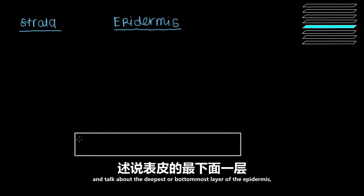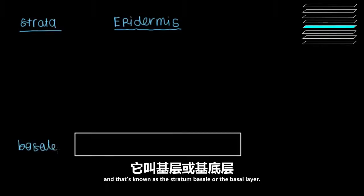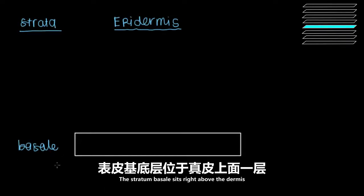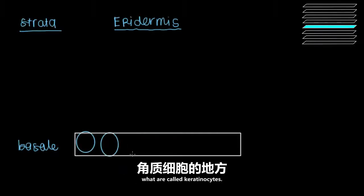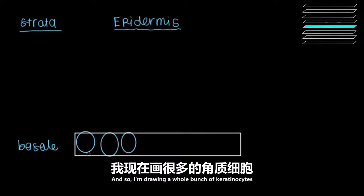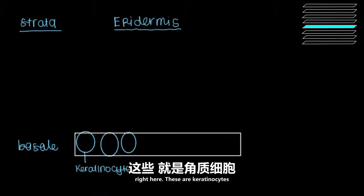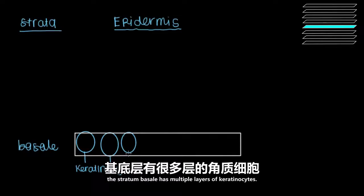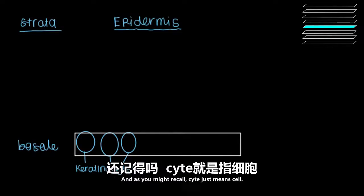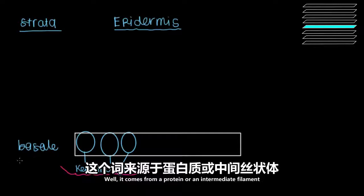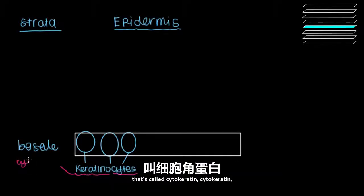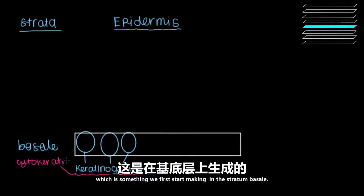We'll start from the bottom and talk about the deepest layer of the epidermis, known as the stratum basale, or the basal layer. The stratum basale sits right above the dermis and is the place where we first generate keratinocytes. The stratum basale has multiple layers of keratinocytes, and 'cyte' just means cell. 'Keratino' comes from a protein — an intermediate filament — called cytokeratin, which is something we first start making in the stratum basale.